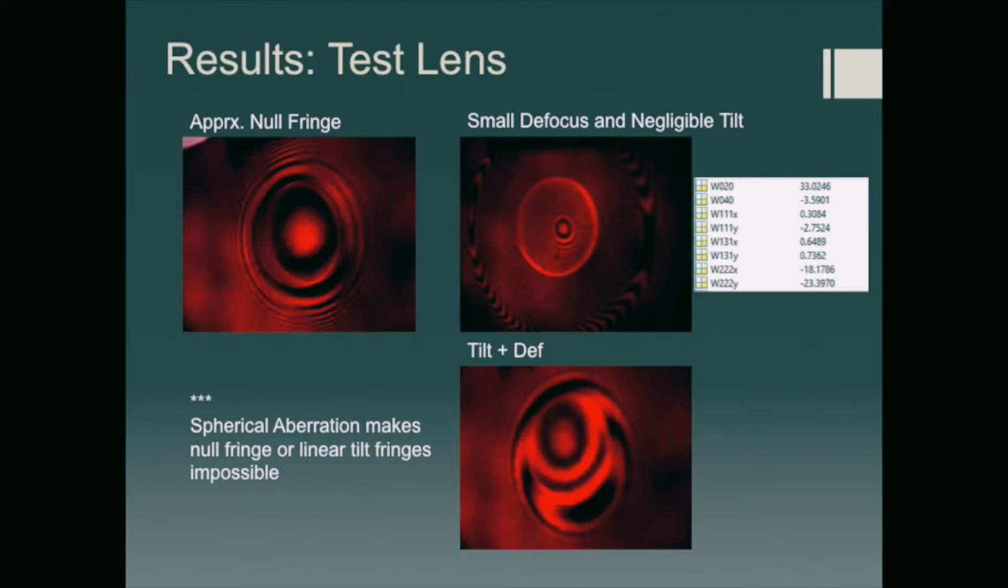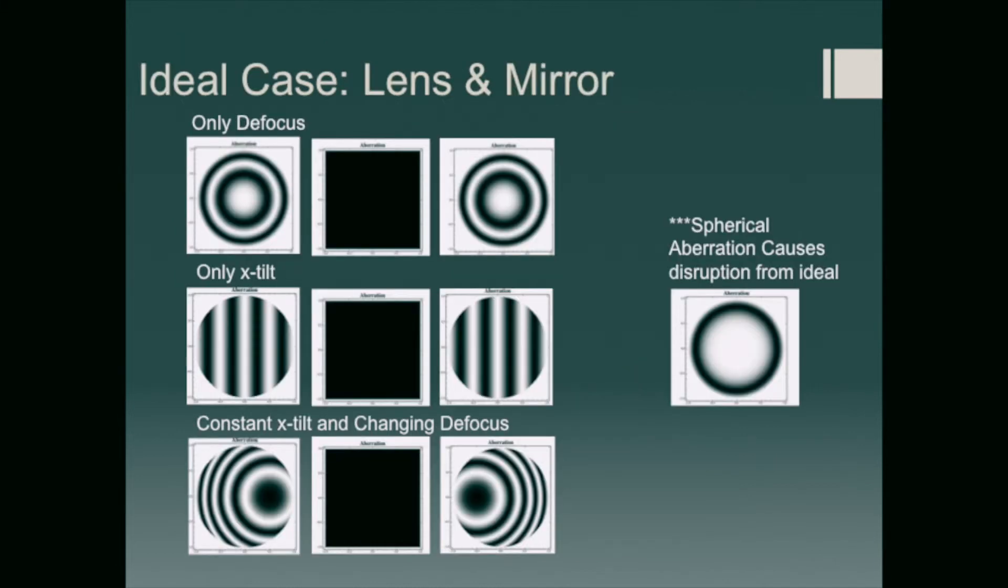And finally, you can see our tilt and defocus interferogram with very high contrast fringes down below. Finally, it's important that we talk about what we should have seen. So with both the mirror and the lens, we should have seen with only defocus these circular fringes with a null fringe that has no fringe content. And then with tilt, you would see linear fringes if it's in the x-direction that would be perpendicular to that axis. And finally, if you have tilt and defocus, you would have circular fringes that are offset. But unfortunately, we also have spherical aberration in both of our elements, so we cannot get a perfect null fringe.